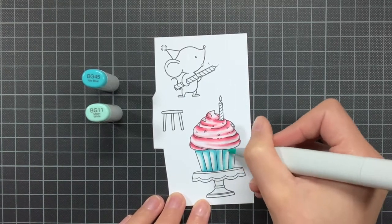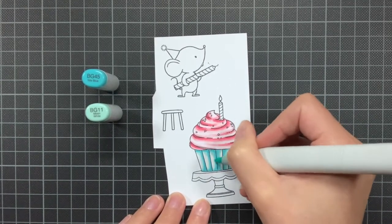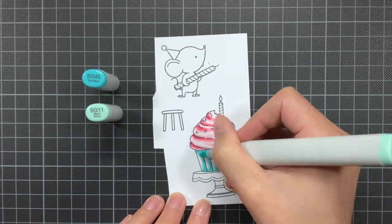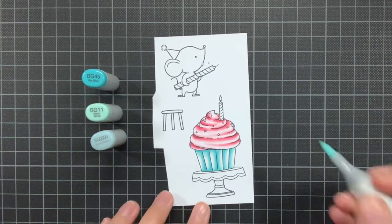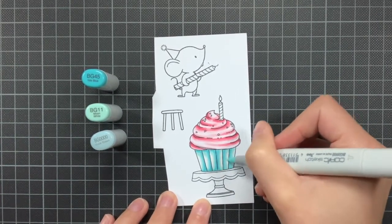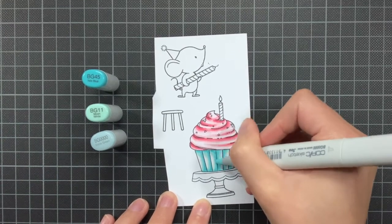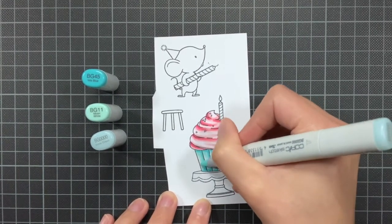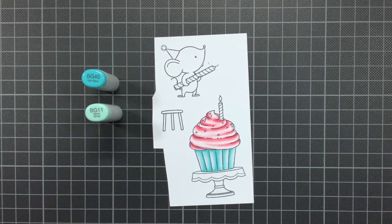And after applying the first layer I am also going to do a second layer. And I am also just doing this to bring back more of the contrast, because you do lose it a bit when you do the first layer. And then finally I finish it off with the BG0000.